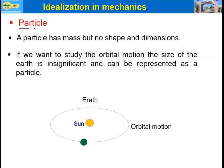The first idealization is the particle. A particle has mass but no shape and dimensions. This means when we assume an object as a particle, we are saying the object has no shape and dimensions — meaning we are going to lump the mass of the object at a single point.